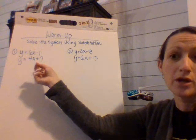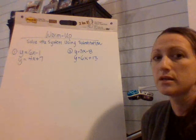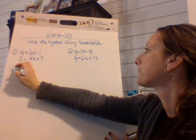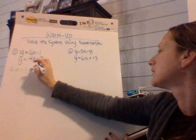So if I look at number one, they're both in y equals. So I'm going to take 6x minus one and I'm going to set it equal to 4x plus seven.